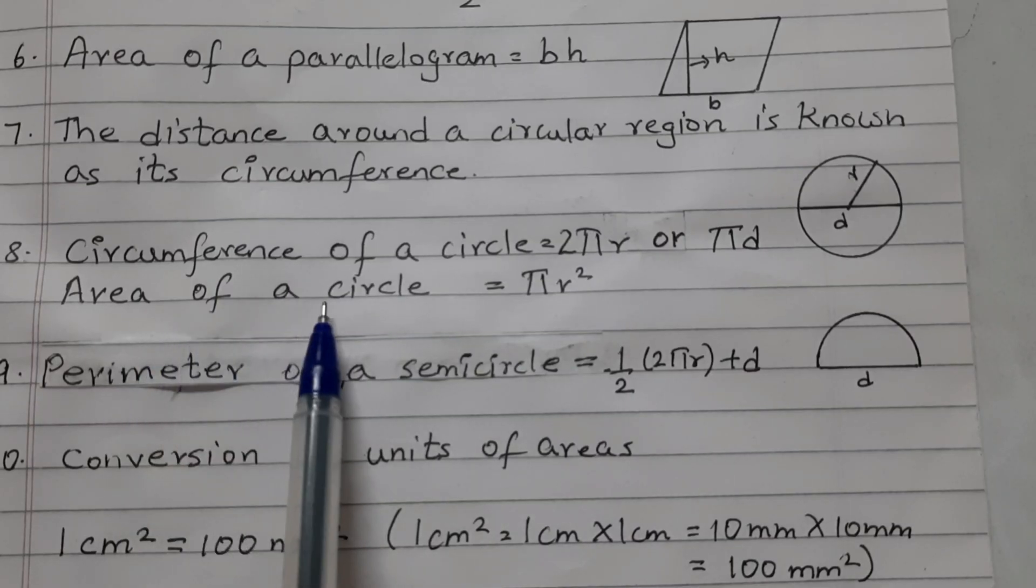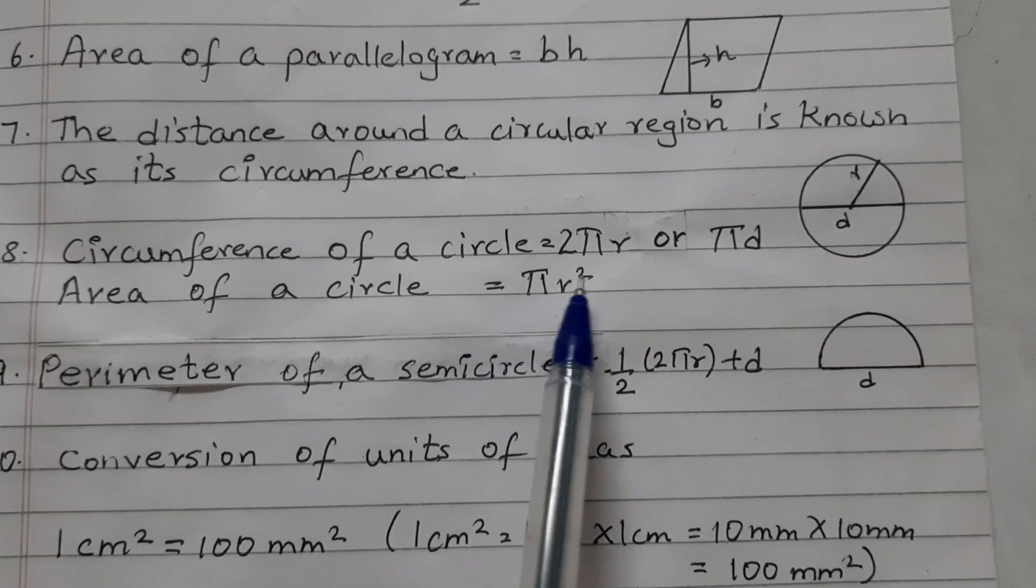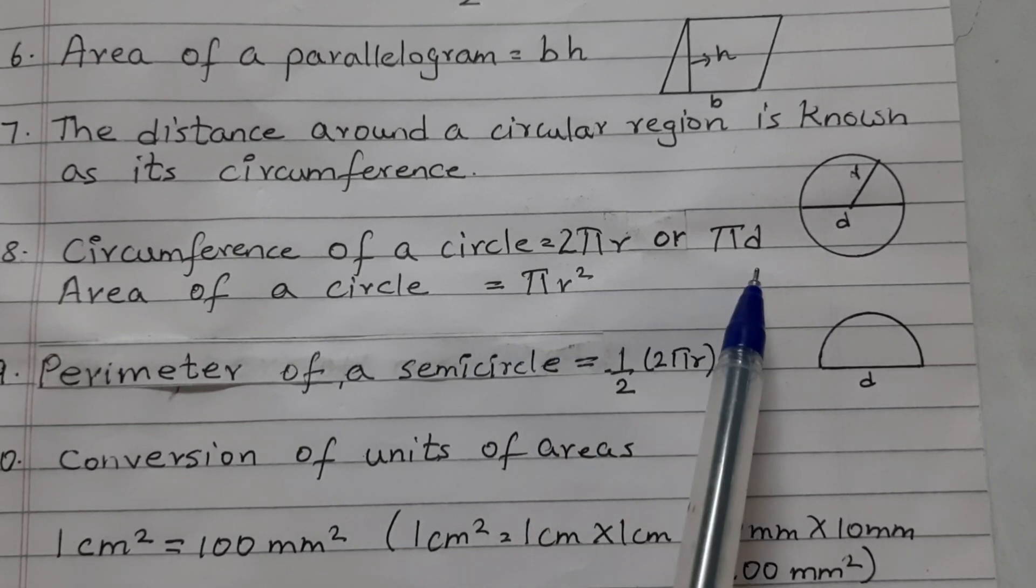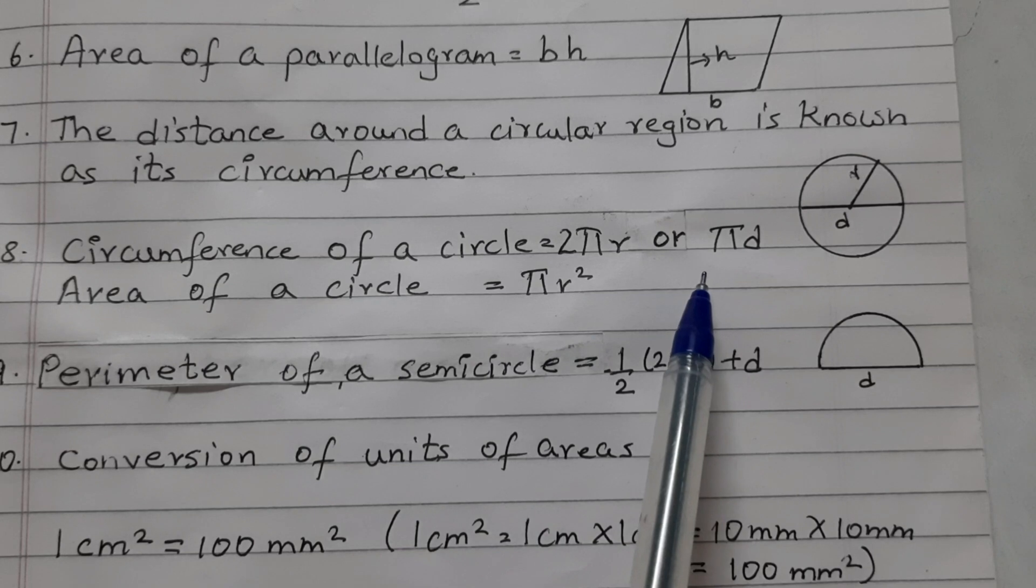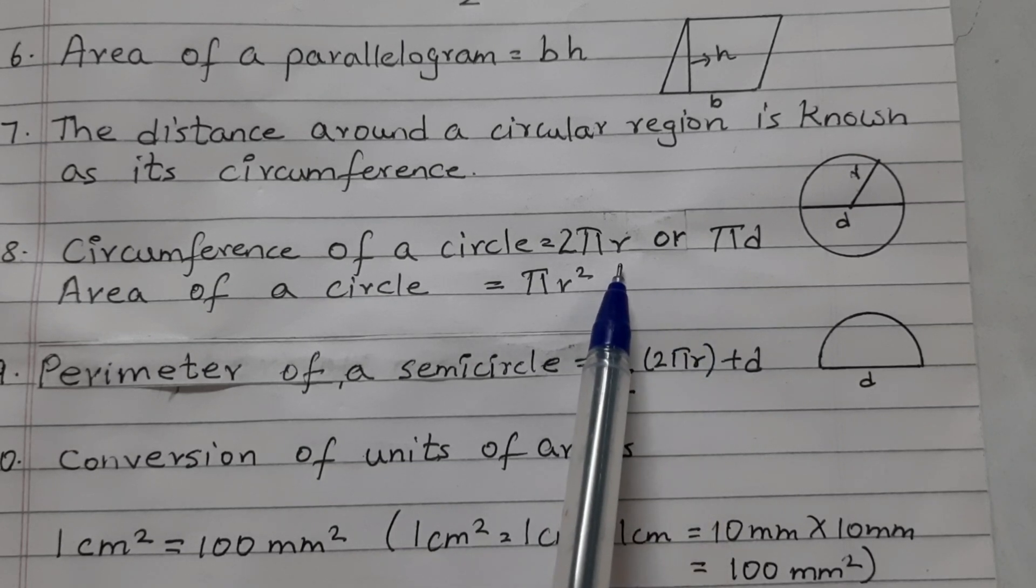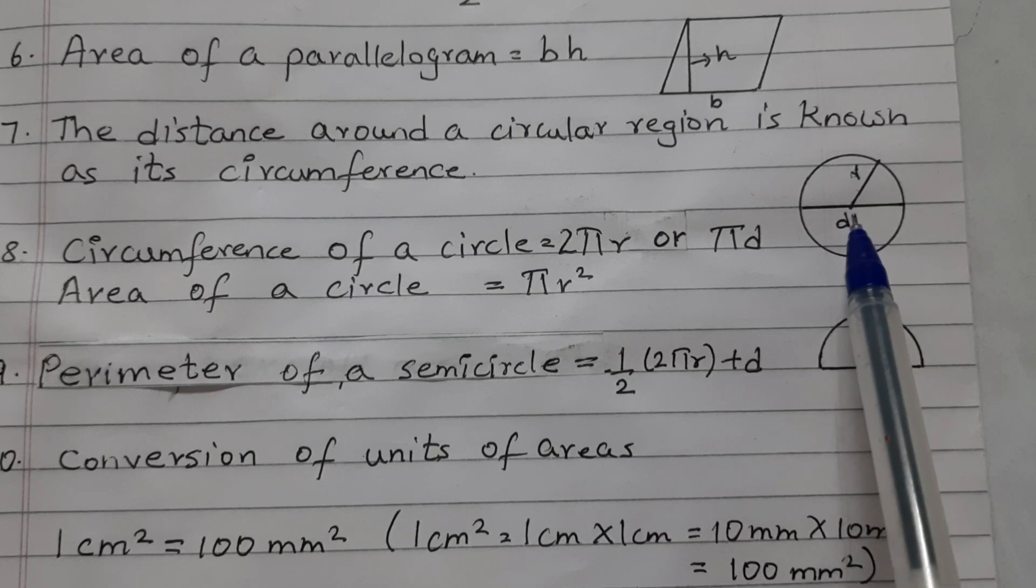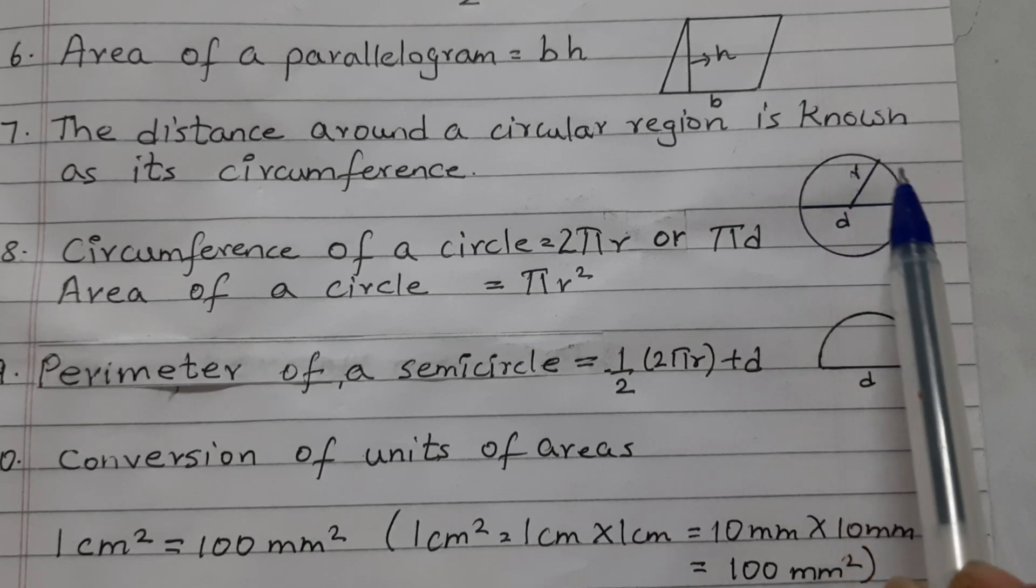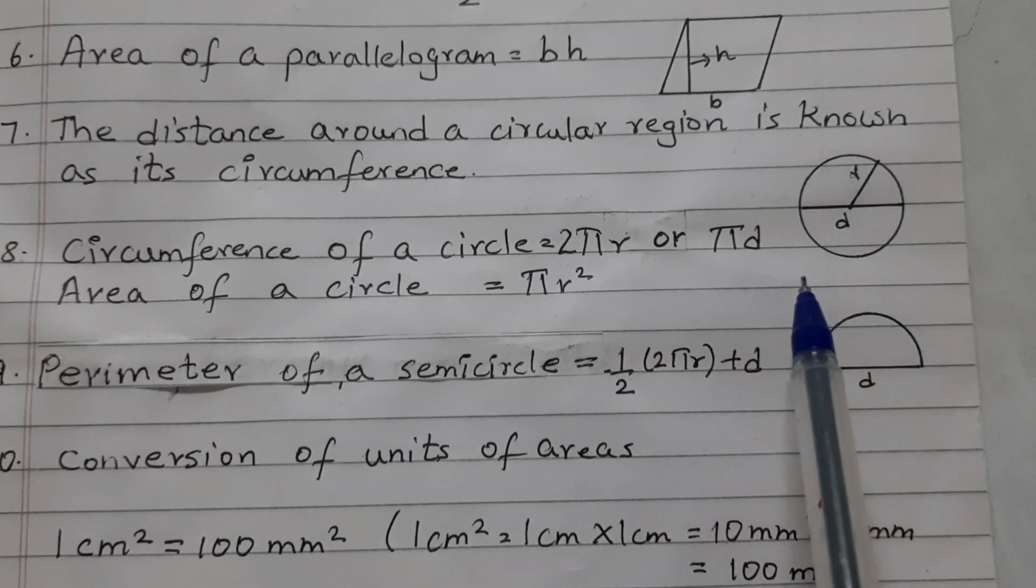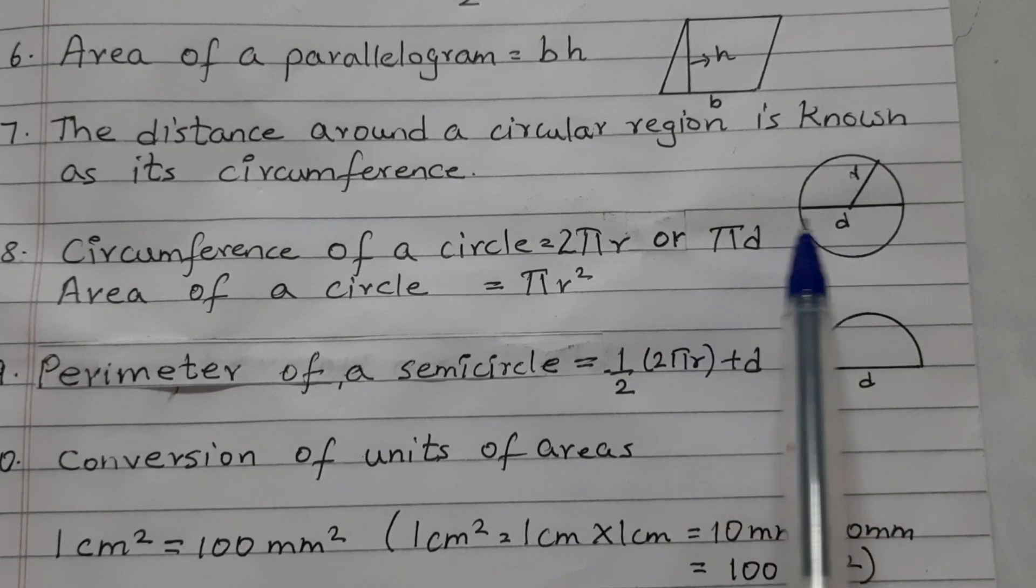Circumference of a circle is equal to 2 pi R or pi D. You may use any of these two formulas. Here R is the radius, the distance from the center to any point on the circumference, on the circle. And D is the diameter.